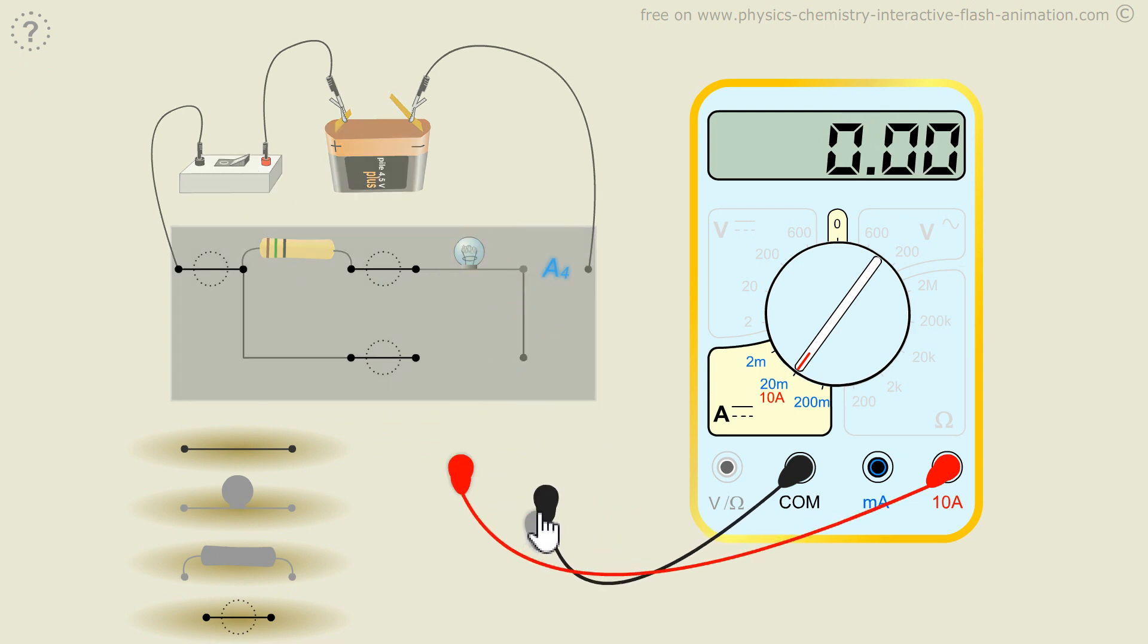What about when the dipoles are in parallel? I am going to measure the intensity of the current in the main branch, in I1, that is to say the current coming out of the battery. So I have to use a conductor here and complete it here.